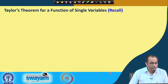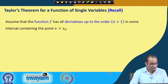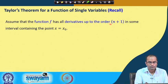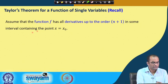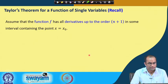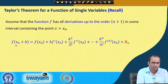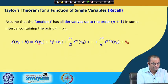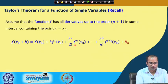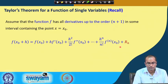We need to recall Taylor's theorem for functions of a single variable. Assume that f has all derivatives up to order n+1 in some interval containing the point x = x₀. In that case we can write f(x₀+h) — a point in the neighborhood of x₀ — as f plus h times the first-order derivative at x₀, plus h² /2! times the second-order derivative, and so on.